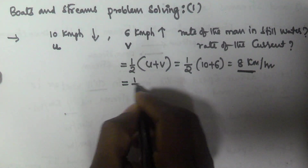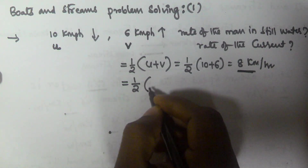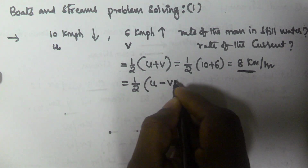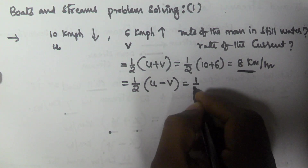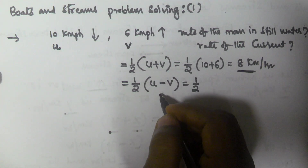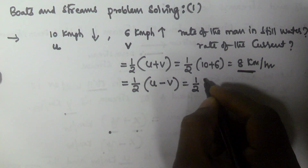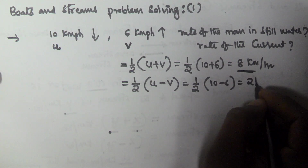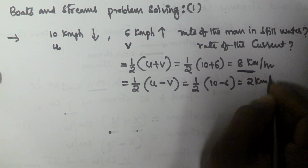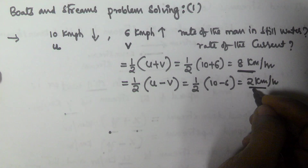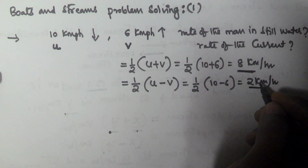The rate of the stream is given by 1/2 into (downstream minus upstream). These formulas were covered in the previous video. So that is 1/2 into (10 minus 6), which gives us 2 km per hour. This is the speed of the current, that is the speed of the stream.